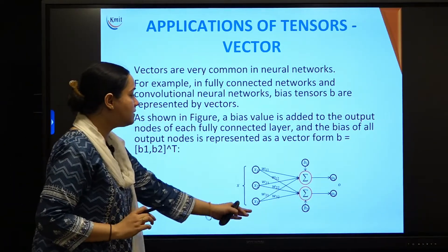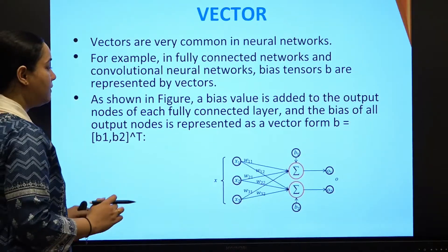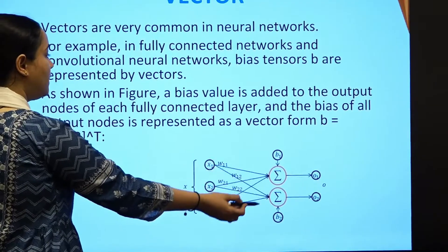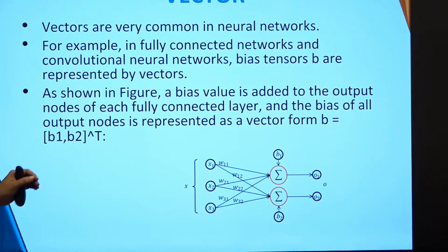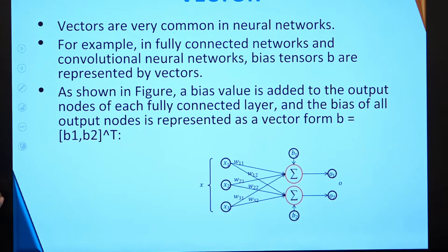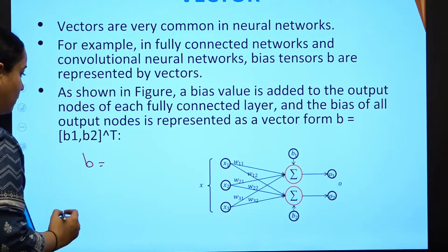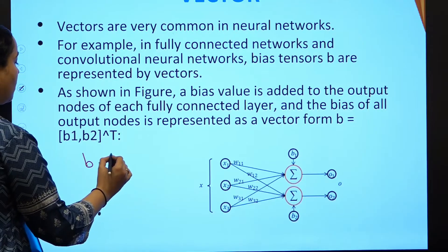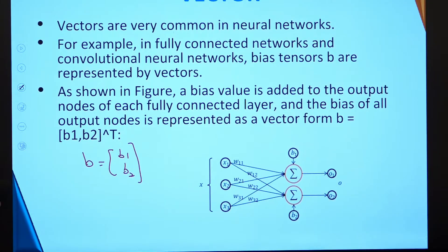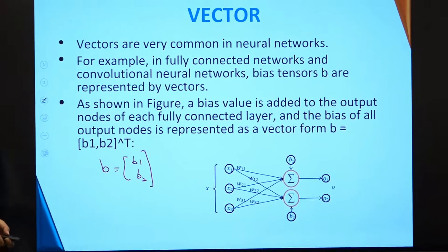As shown in the figure, this is a simple example of a fully connected network. The bias value is added to the output nodes of each fully connected layer, and the bias of all output nodes is represented as a vector — which is a concatenation of b1 and b2. So the bias tensor for this particular network is a combination of b1 and b2, and it is working as a vector. This is the typical application where you will use vectors in a fully connected network.